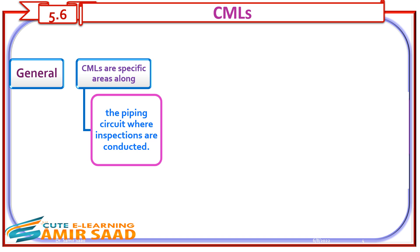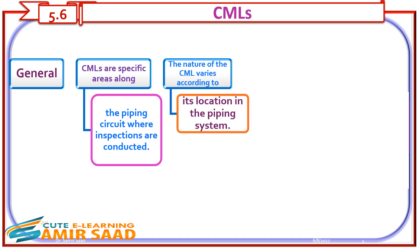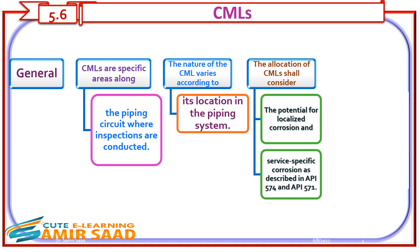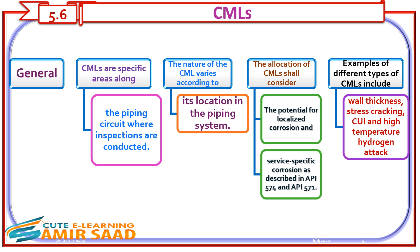General CMLs are specific areas along the piping circuit where inspections are conducted. The nature of the CML varies according to its location in the piping system. The allocation of CMLs shall consider the potential for localized corrosion and service-specific corrosion as described in API 574 and API 571. Examples of different types of CMLs include wall thickness, stress cracking, CUI, and high-temperature hydrogen attack.